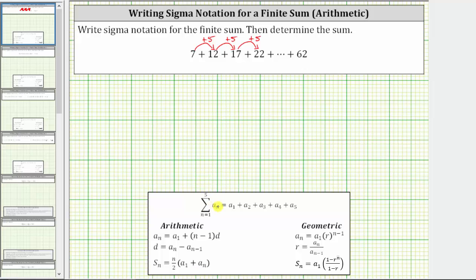Let's begin by determining the formula a sub n that will generate the terms of the series. The first term in the series is seven, which means a sub one equals seven. And because the pattern is that we add five to determine each successive term, the common difference d equals five.